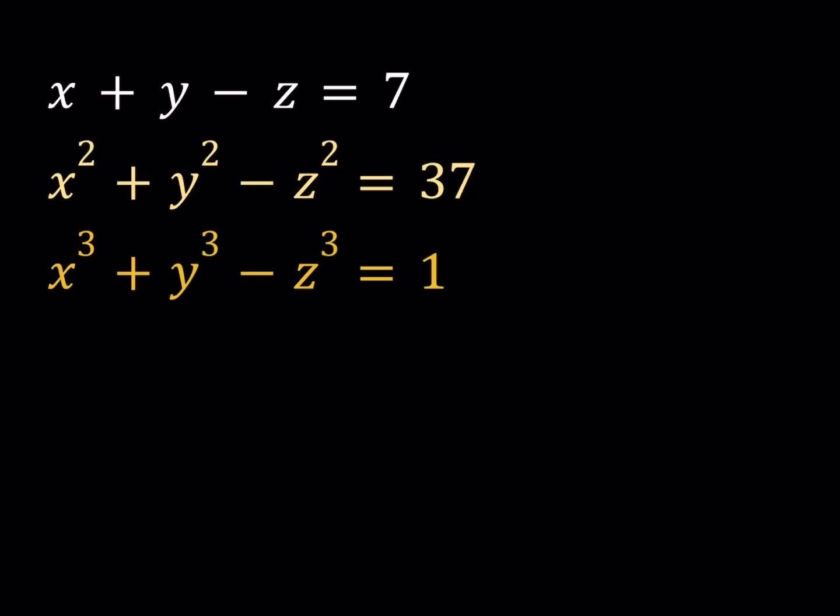So let's go ahead and start manipulating this equation. First of all, notice that we have the first powers, second powers, and the third powers. I'm going to start with the first equation, and then I'll isolate the x plus y. So let's start by writing x plus y is equal to z plus 7.